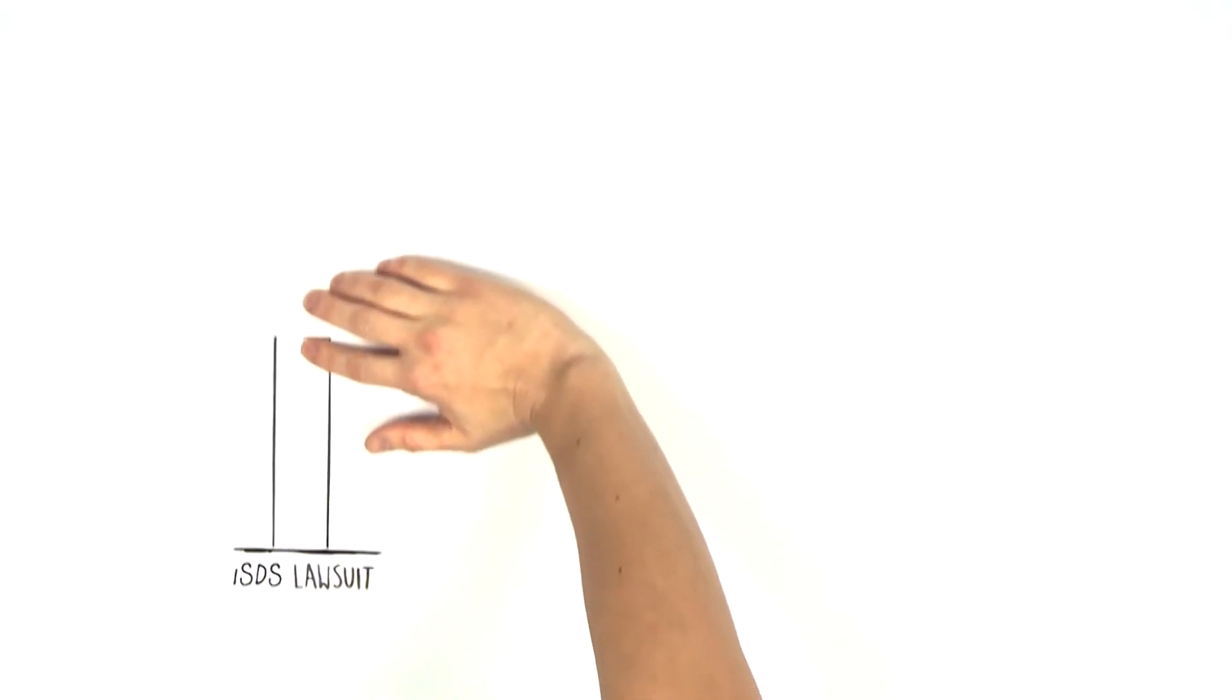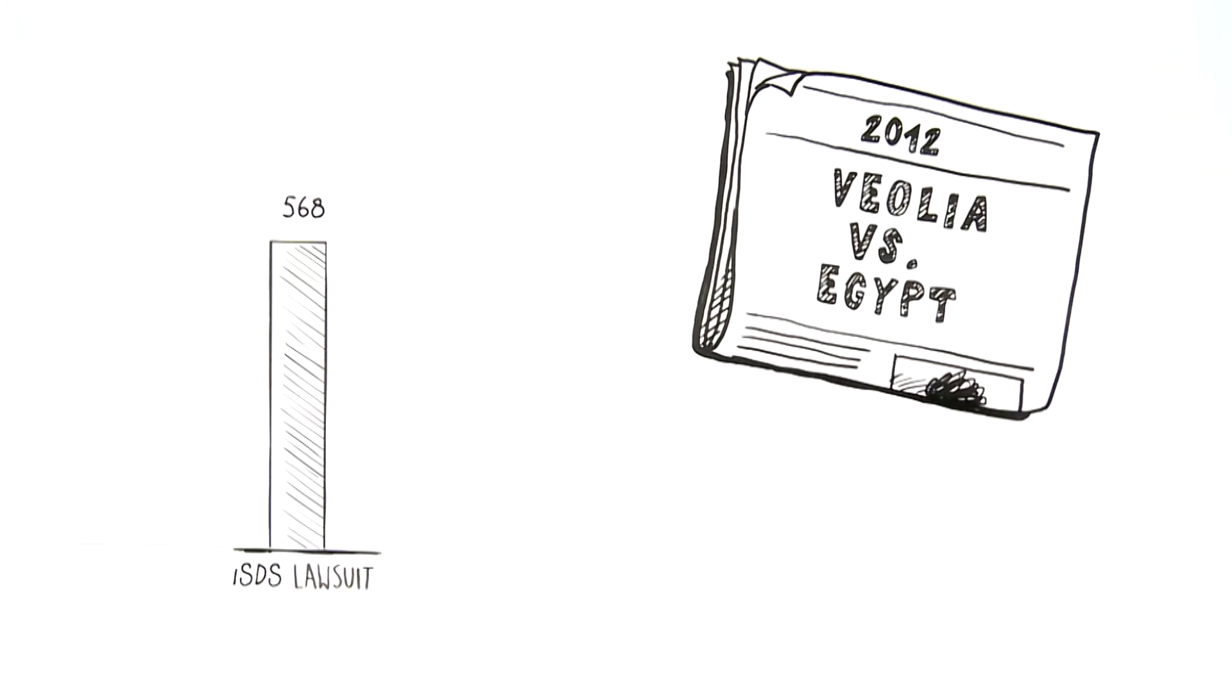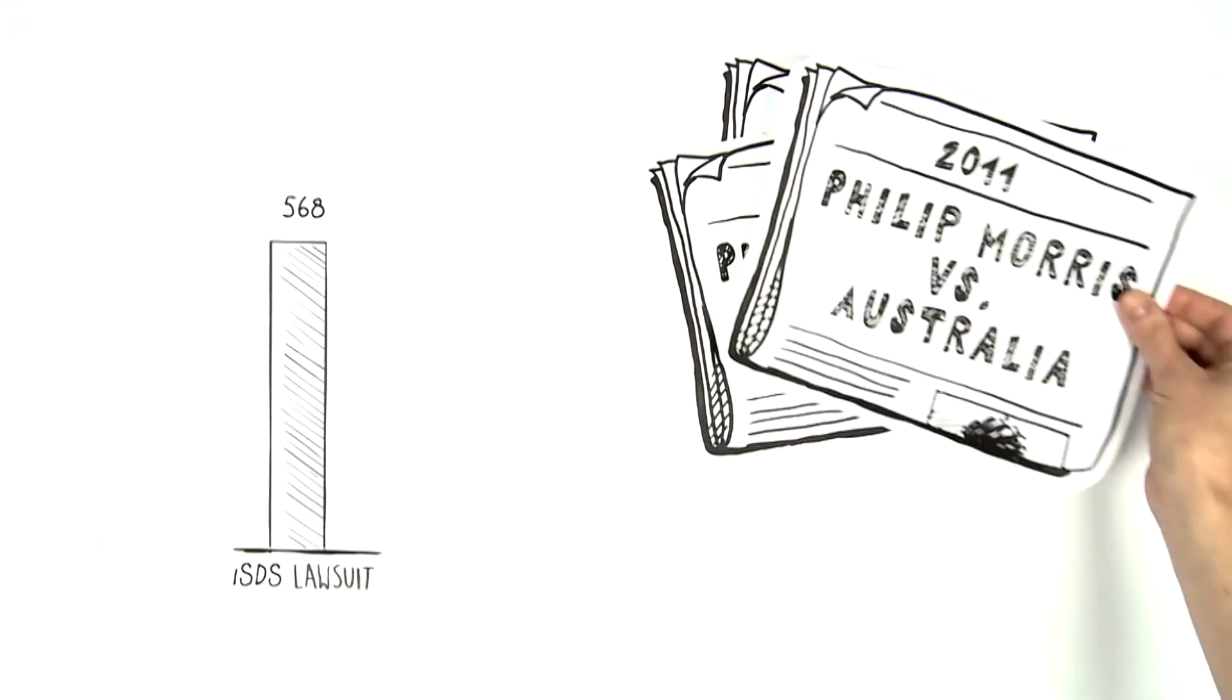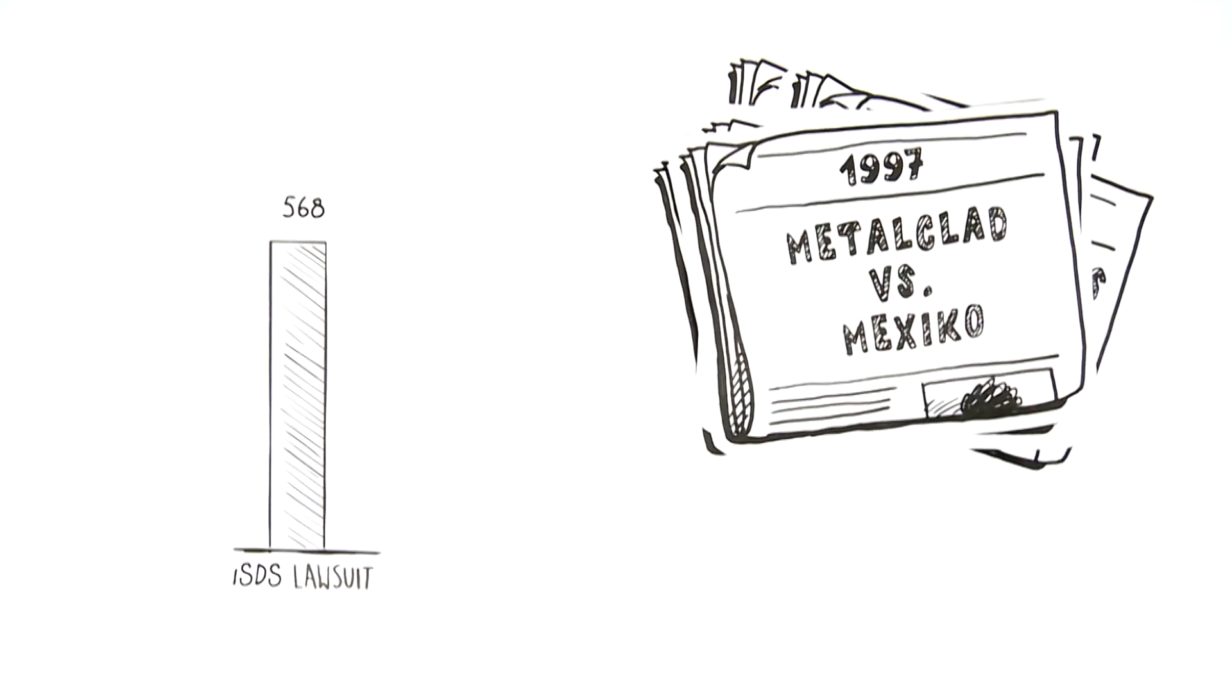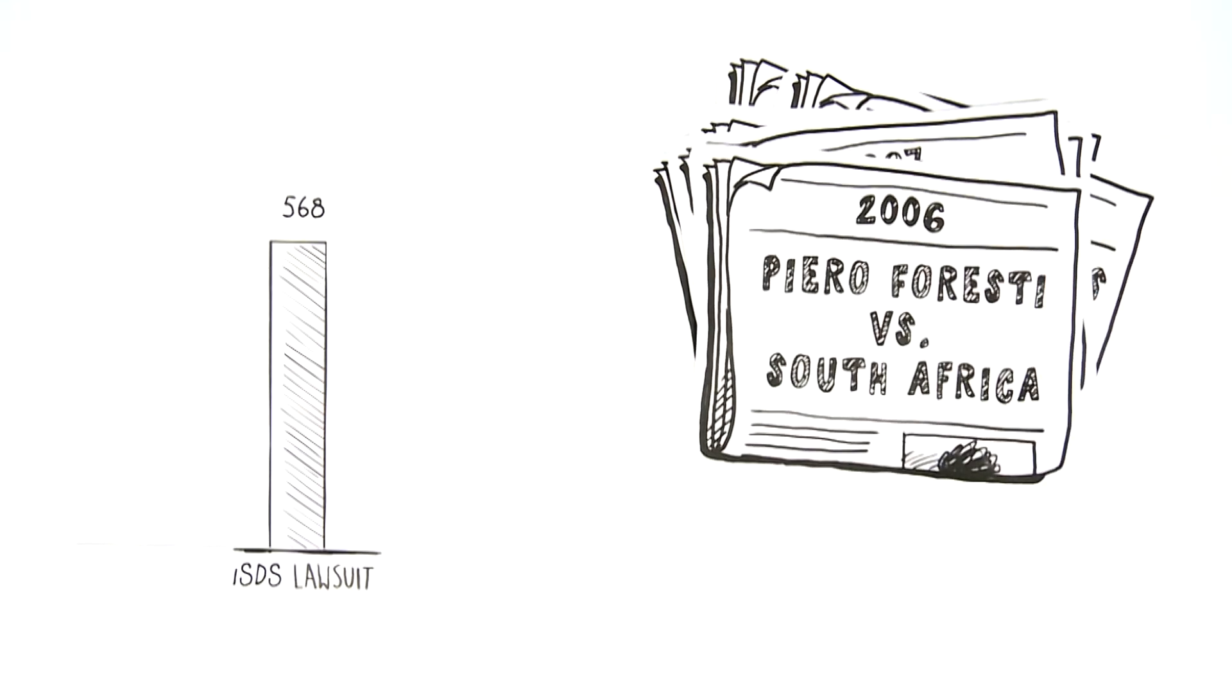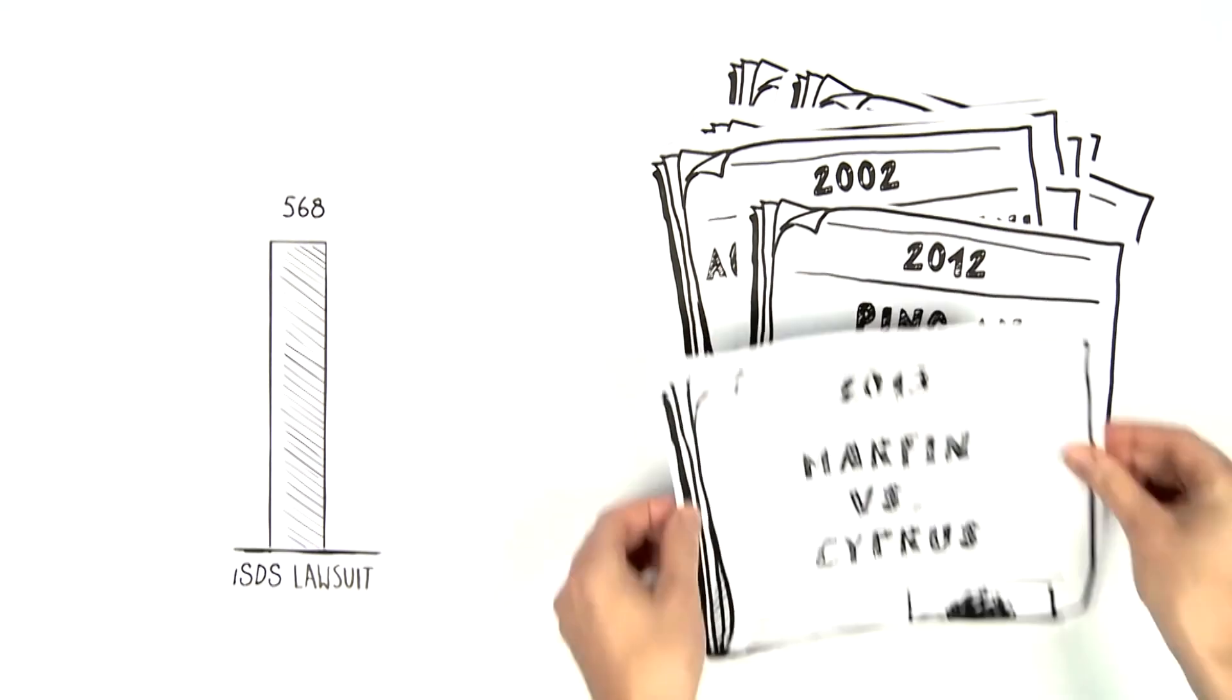The number of ISDS lawsuits is rising rapidly. To date, there are 568 known cases worldwide. Among other things, corporations are suing to block a raising of the minimum wage, block health protection measures, overturn a ban on toxic waste dumping in a drinking water area, block compensation for victims of apartheid, block the repeal of water privatisation, or block the terms of bank bailouts.